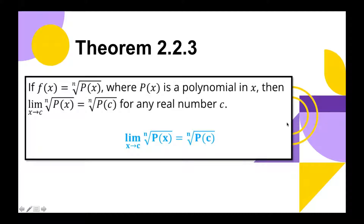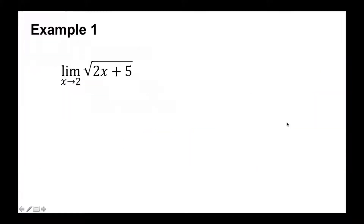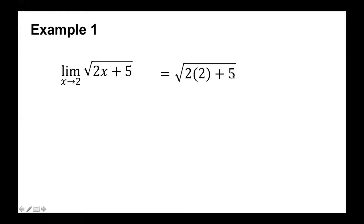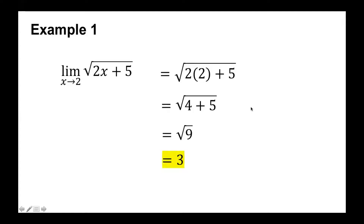Let us use Theorem 2.2.3 to evaluate our previous example. The limit of √(2x + 5) as x approaches 2 is equal to √(2·2 + 5). Basically, what you do here is apply direct substitution by substituting x = 2, since c = 2. Simplified: √(4 + 5) = √9 = 3. So by Theorem 2.2.3, the limit of √(2x + 5) as x approaches 2 is equal to 3.